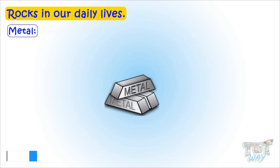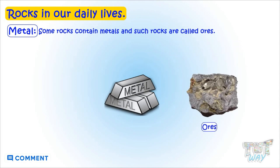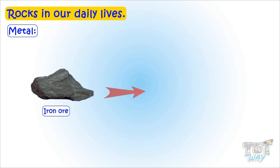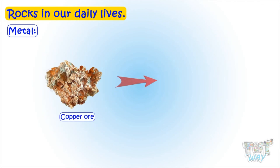Some rocks contain metals, and such rocks are called ores. Metals are extracted from such ores using various processes. For example, iron ore is used to make iron and steel, and copper is extracted from copper ore.